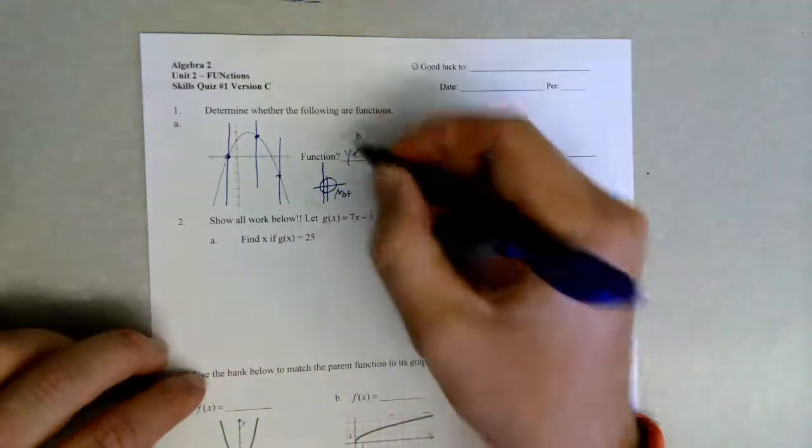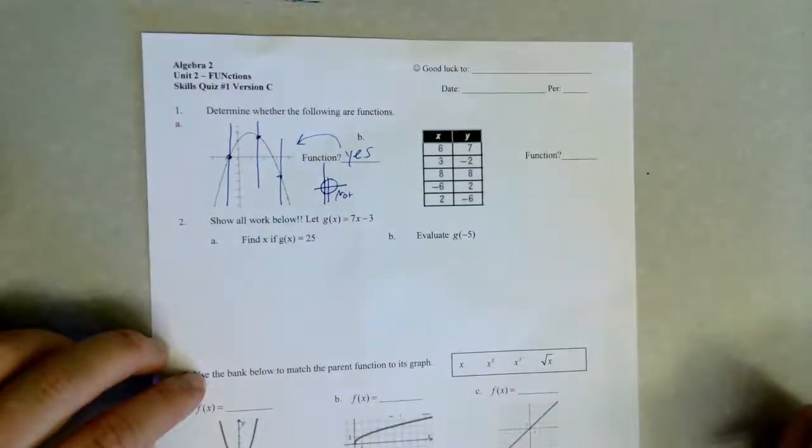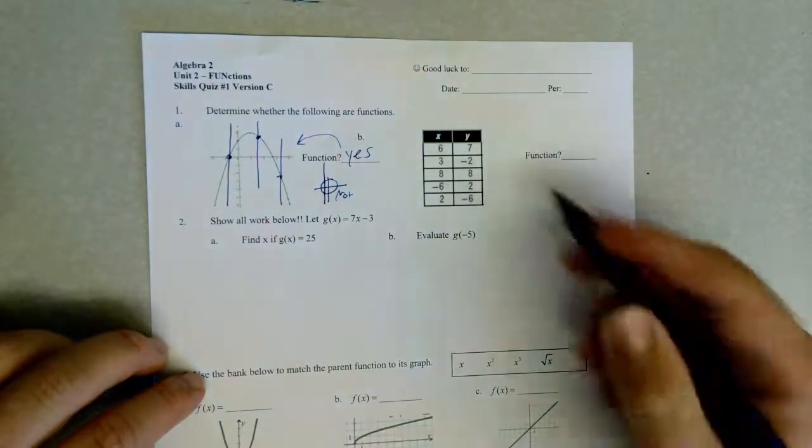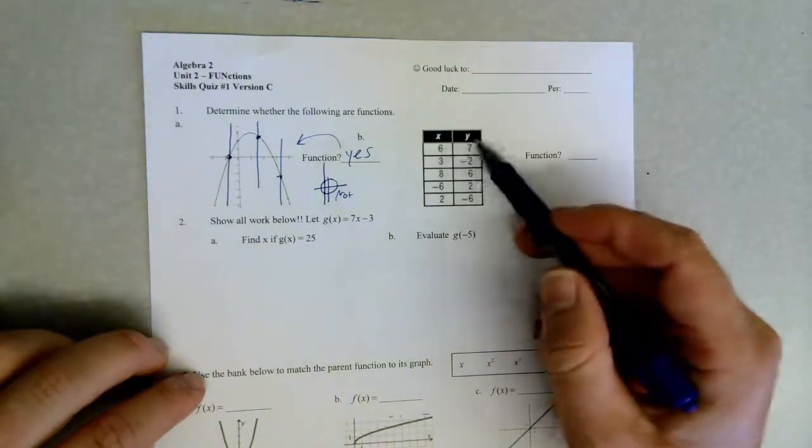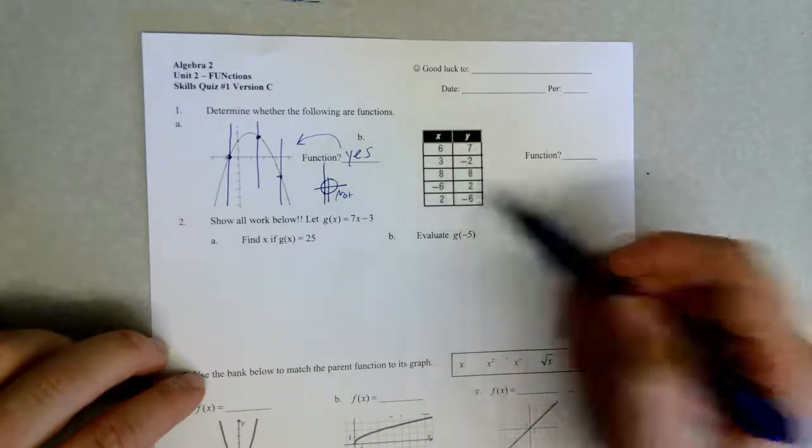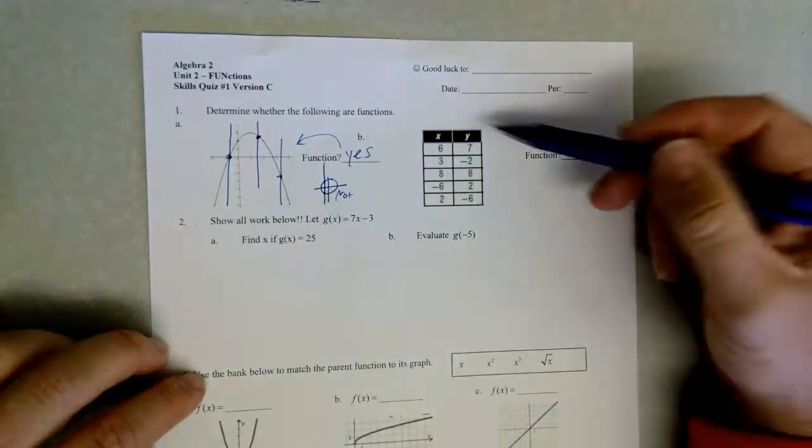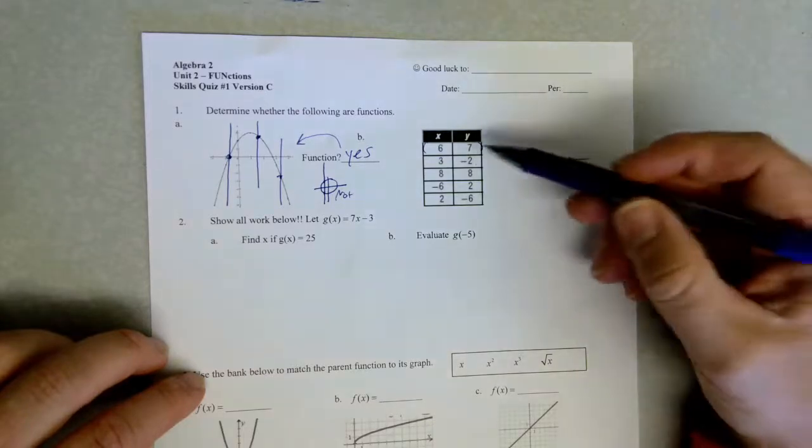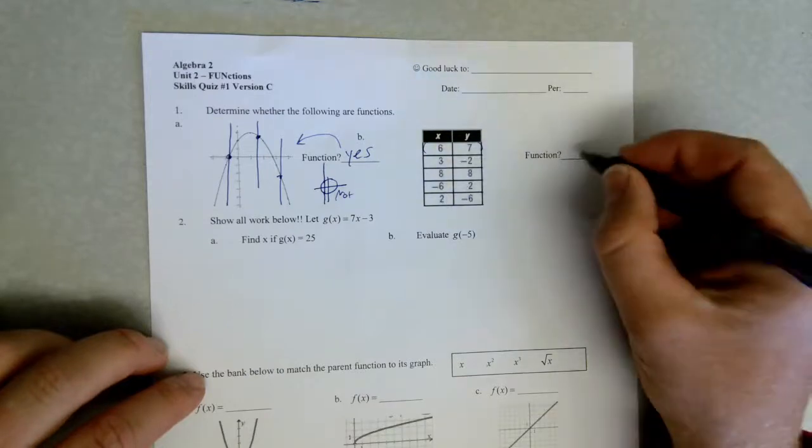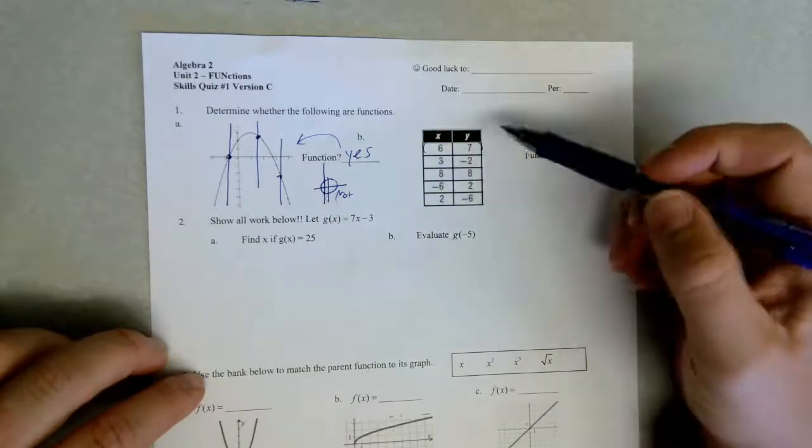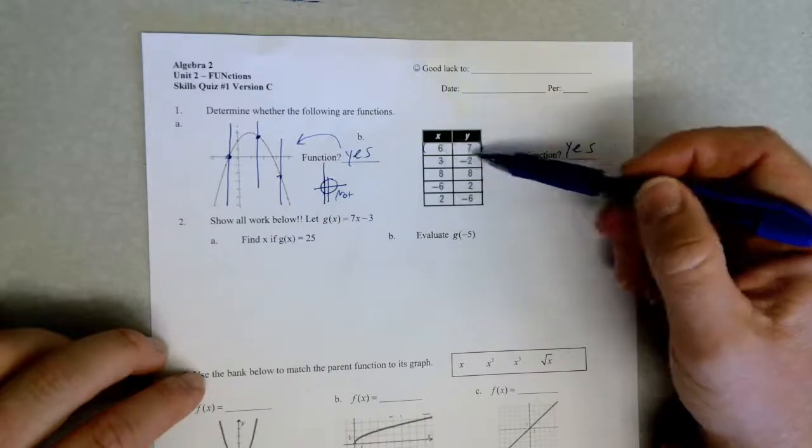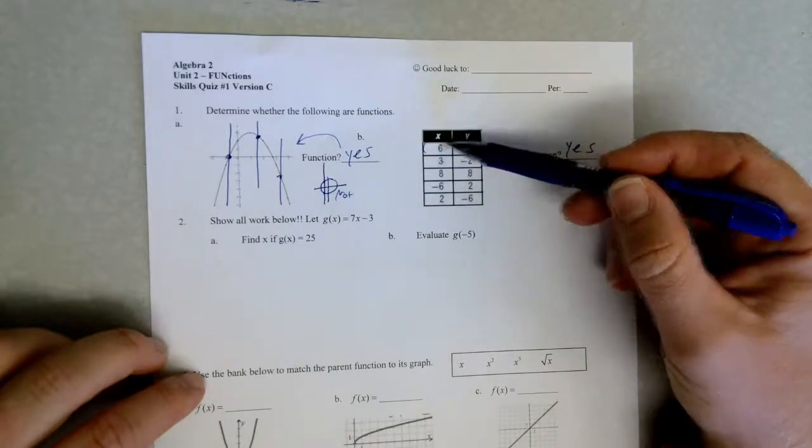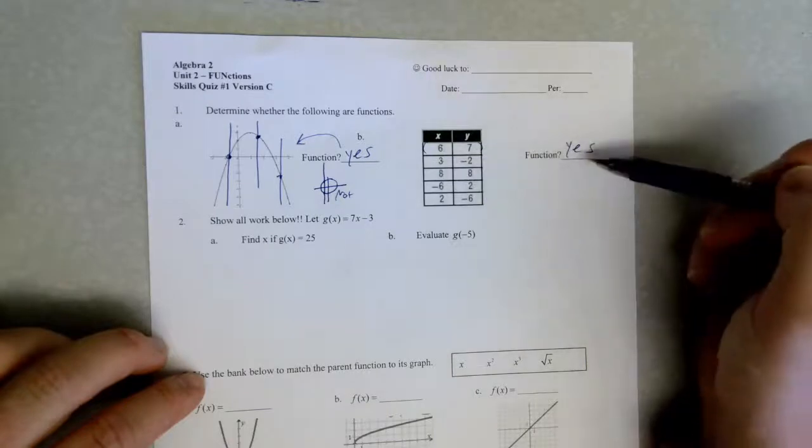So now we have a set of data, x's and y's: (6,7), (3,-2), (8,8), (-6,2), (2,-6), asking if these coordinate points represent a function. A trick to know about this: whenever we have coordinate points or data points, if there's never any repeating x values, it definitely will be a function because there's no chance for one of the x's to have two different y's. Each x value only has one y value, so that's a function.